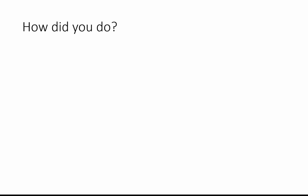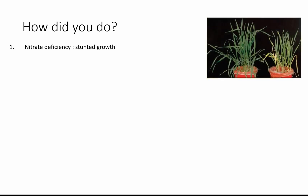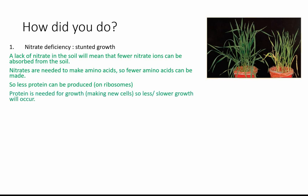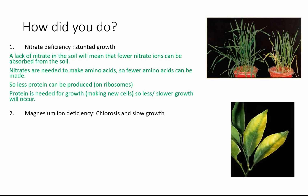For nitrate deficiency and stunted growth: lack of nitrate in the soil means fewer nitrates are absorbed by active transport. Because nitrates are needed to make amino acids, fewer amino acids are made, which means less protein can be produced — remember that happens on the ribosomes. Proteins are needed for growth, making new cells, making enzymes, and so on, so there will be less or slower growth.